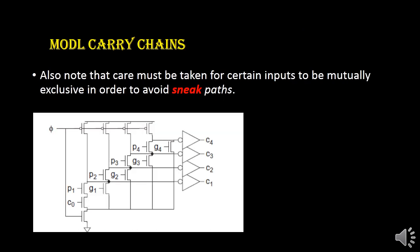This is the MODL carry chain structure. Using this circuit we can produce C4, C3, C2, and C1 outputs in a single stretch — multiple outputs using a single domino logic circuit. One important issue is that we must ensure certain inputs are mutually exclusive. If that care is not taken, there will be a sneak path — an unwanted short circuit path — which will give incorrect output.